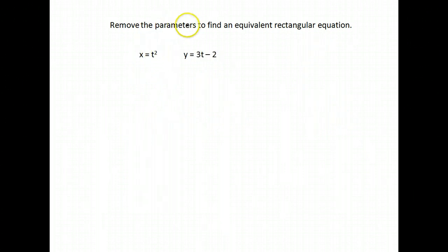Let's remove the parameters to find an equivalent rectangular equation. We want to solve one of these equations for t. It can be either one. Now, if we look at this, this has t squared.